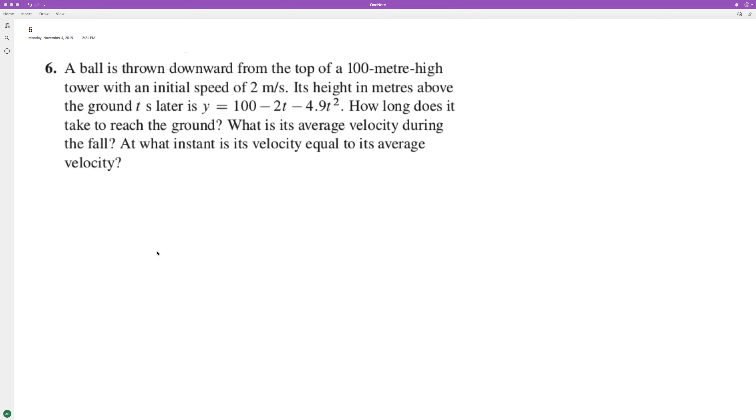A ball is thrown downward from the top of a hundred meter high tower. It's thrown downward, so it's got an initial speed of two meters a second. The height above the ground follows this equation here y = 100 - 2t - 4.9t^2.